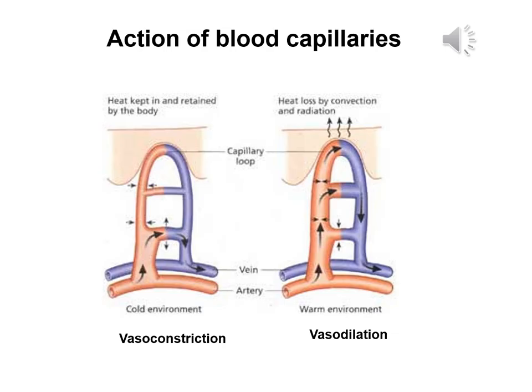Ini adalah tindakan blood capillary — vasoconstriction dan vasodilation. Vasoconstriction bermaksud blood capillary mengecil semasa sejuk, mengurangkan haba yang dibebaskan. Manakala vasodilation, saluran darah mengembang, jadi haba dibebaskan secara convection dan radiation dekat permukaan kulit.